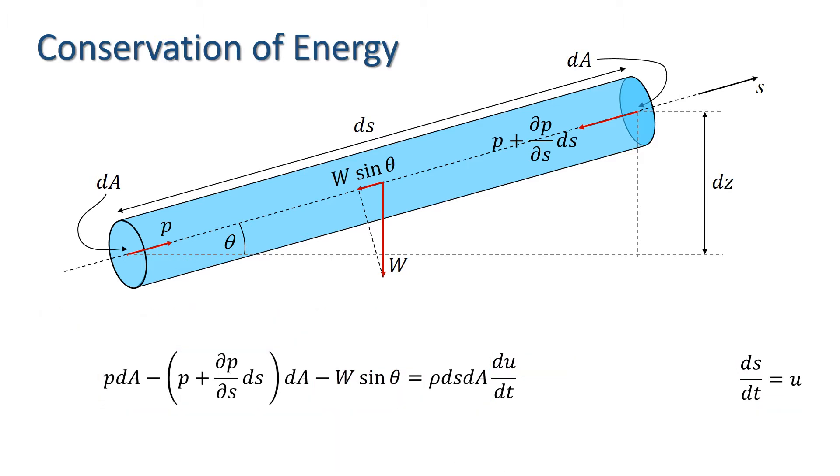Let's unravel this. First, we know that the P dA terms cancel each other out. Now, we know that the weight of the fluid in the stream tube W equals rho g dS dA, and that sin theta equals dZ by dS.